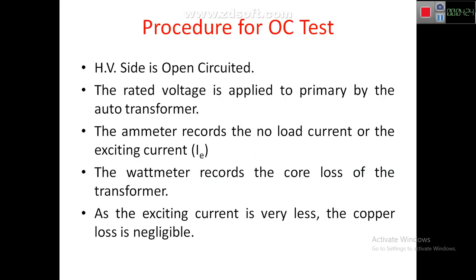Now let us move on to the procedure for the OC test. The HV side is open circuited and the rated voltage is applied to the primary via the auto transformer. The ammeter records the no-load current, which is the exciting current IE. The wattmeter records the core loss of the transformer. Since the exciting current is very small, copper loss is neglected.